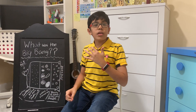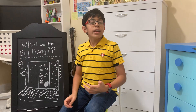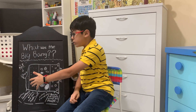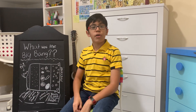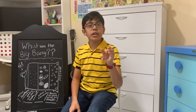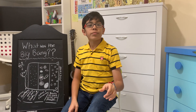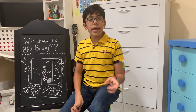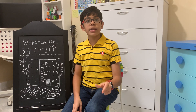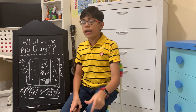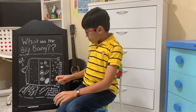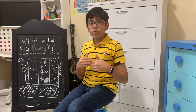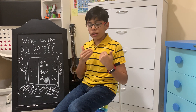Think about it like this: you have something the size of a baseball, and if you scale it down to how the Higgs boson particle expanded, you have something the size of a baseball that within one nanosecond of time expands into something 20 billion light years in length. And so that's how big the universe got in its early stages.